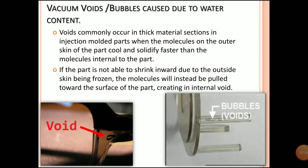The next defect is the vacuum void or a bubble caused due to water content. This defect mainly occurs due to moisture present in your raw plastic material. During injection molding, there is a process of pre-heating your raw material to remove the moisture content. If that process is not done properly, there is a chance of vacuum voids or bubbles being found in your component.